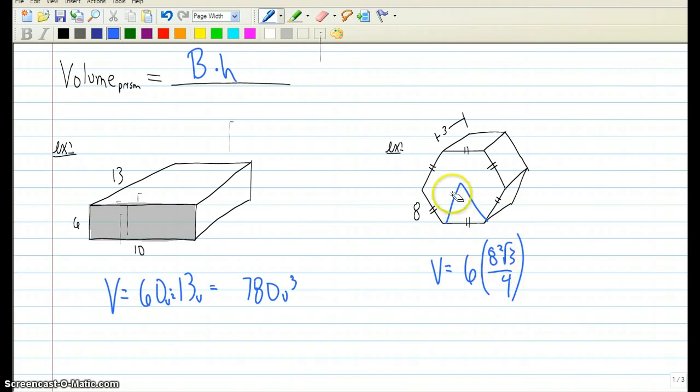So this gives us the area of that base times the height of the prism, which is 3. And if we simplify all that, we get 288 root 3, which is approximately 498.83 units cubed.